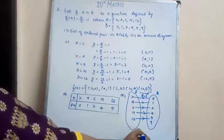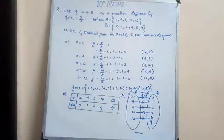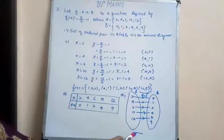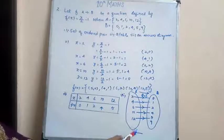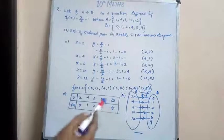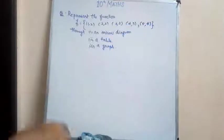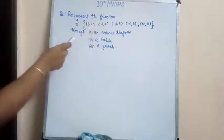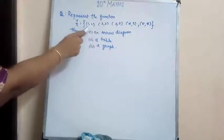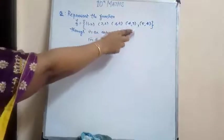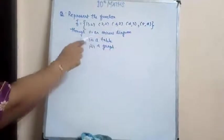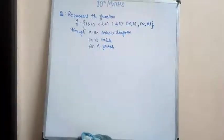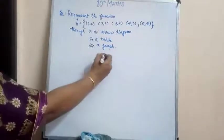So this is the end of the problem. So I will give you another problem for you to work out. Here for today's homework for you, represent the function f = {(1, 2), (2, 2), (3, 2), (4, 3), and (5, 4)} through an arrow diagram, a table, a graph. So this is for today's session. Thank you.